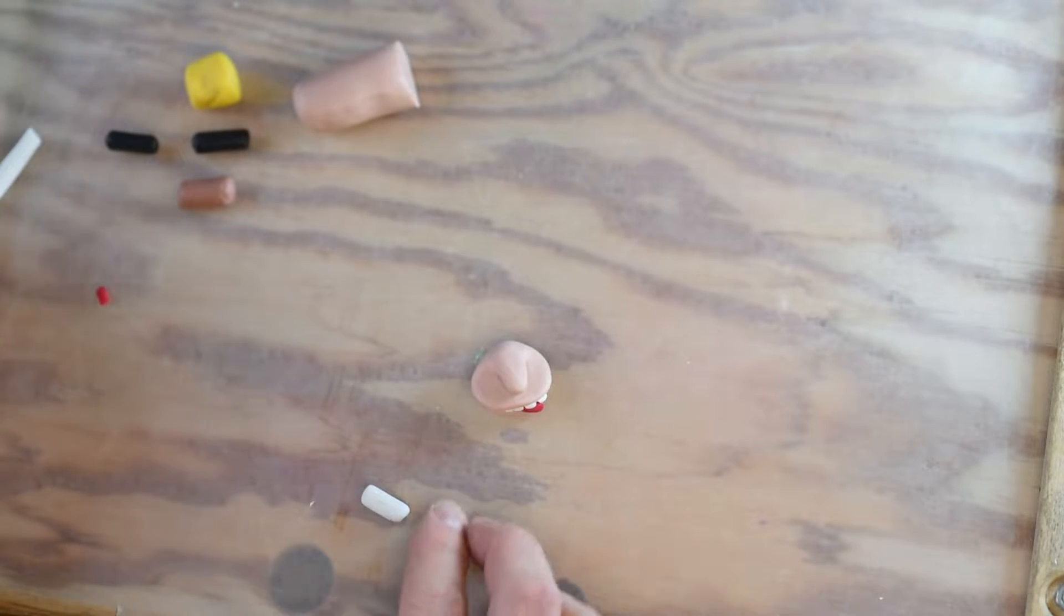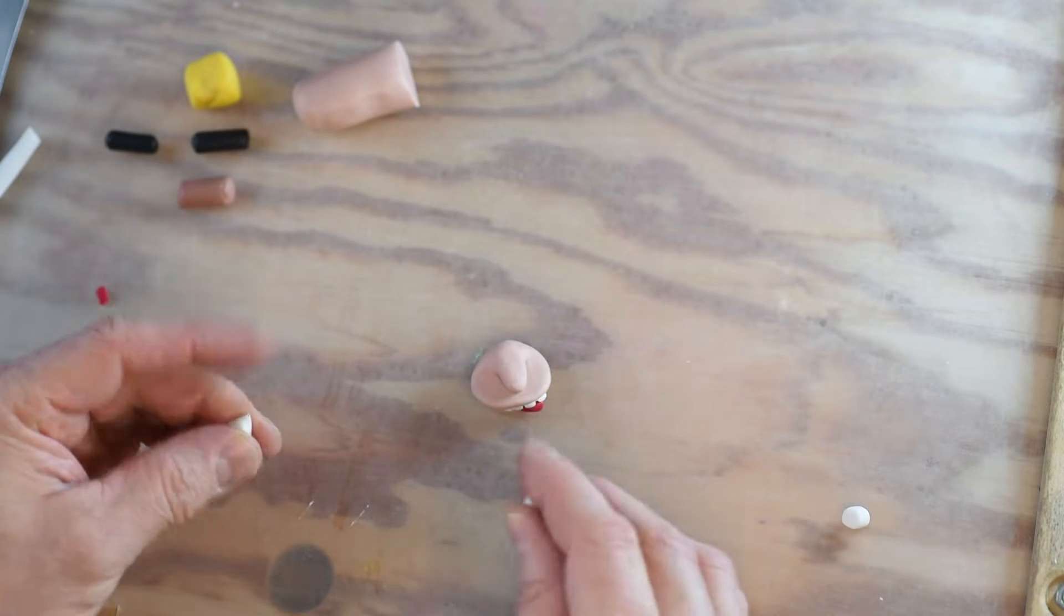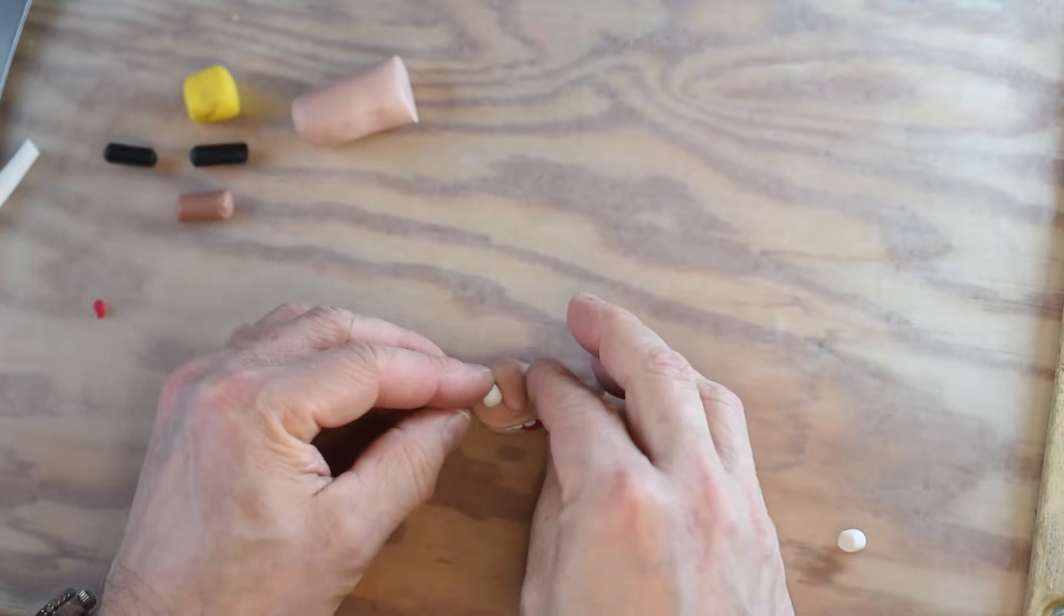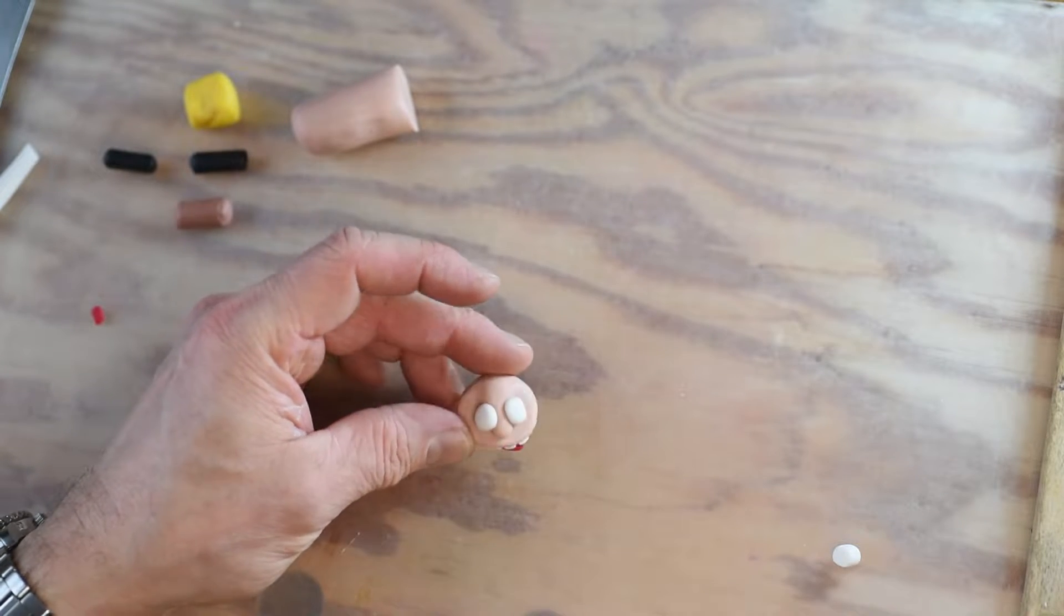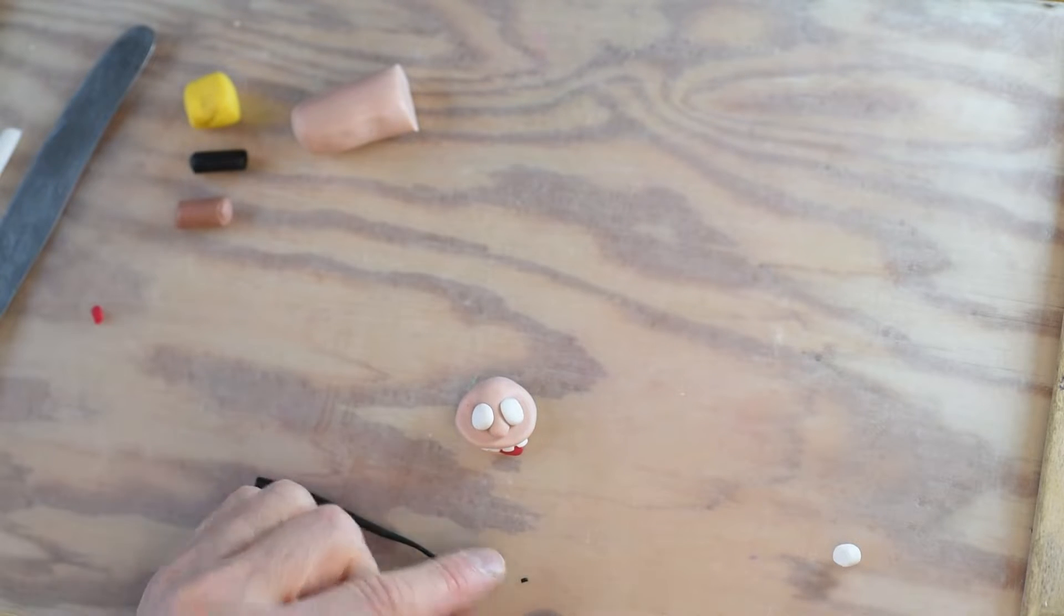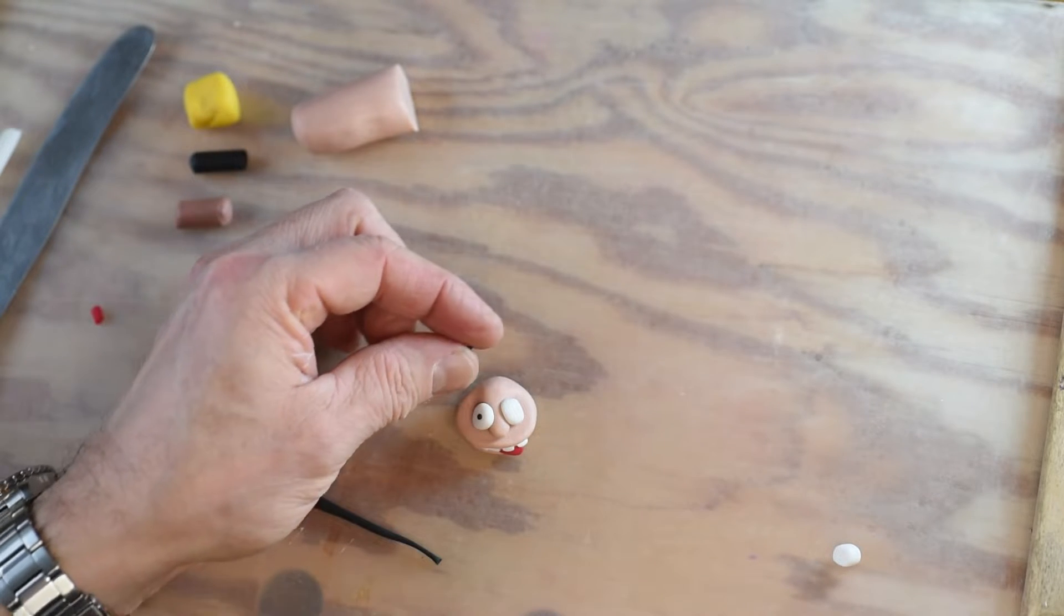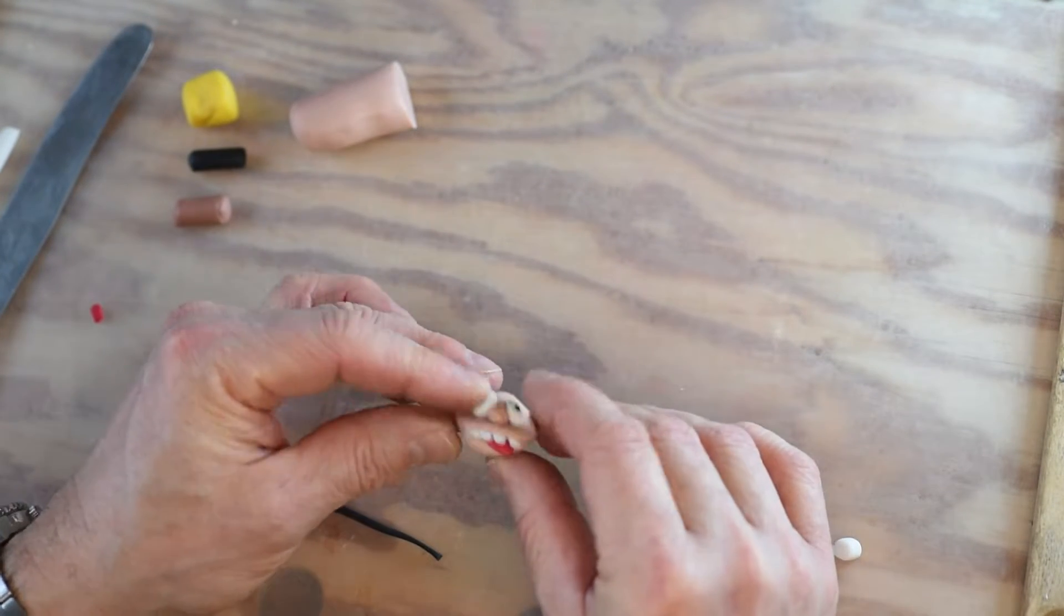The only thing missing right now are two eyes. Roll them and place them close to the nose. Cut two small pieces of black to finish the eyes. And the face is done.